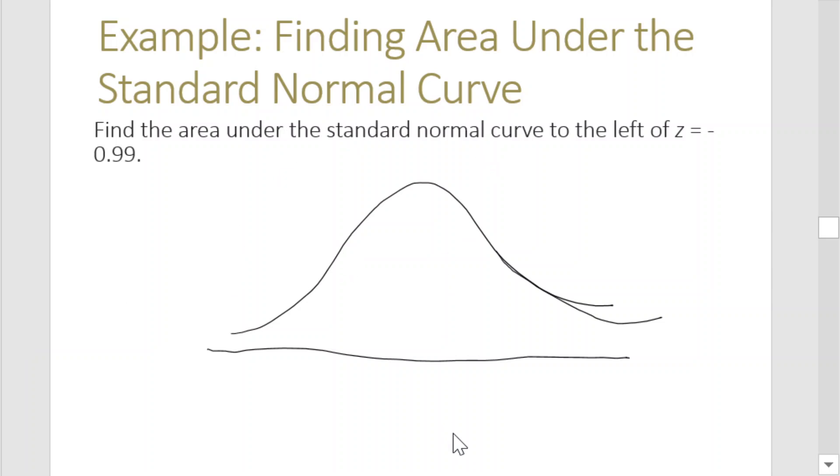So we would be plotting where z equals negative 0.99. Since it's negative, negative 0.99 is around here. So the question is find the area under the standard normal curve to the left, meaning this area to the left of negative 0.99.